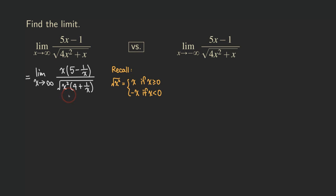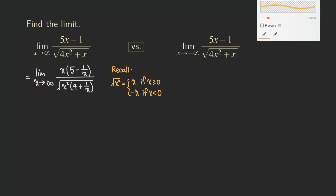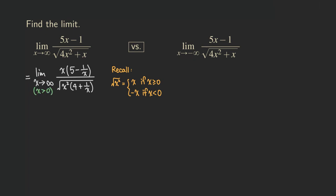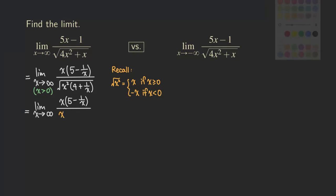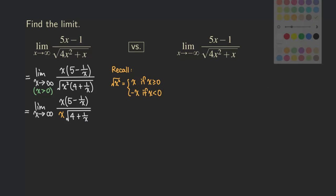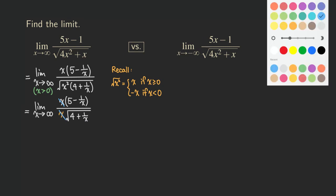Now we need to ask ourselves: is x positive or negative? Since x is approaching infinity, that means x is positive. So we can simplify the square root of x squared as just x. The top doesn't change, so just copy the top. In the denominator, we get just x, and then we still have the 4 plus 1 over x inside the square root. Because we factored out x from the top and from the bottom, we can actually cancel them.